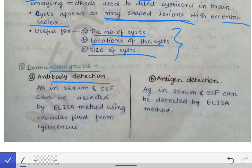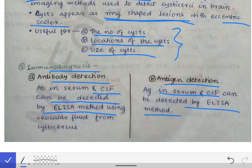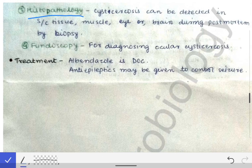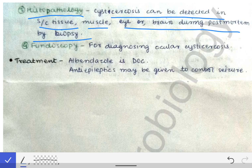Immunodiagnosis can also be performed, including antibody detection and antigen detection. Antibodies in serum and CSF can be detected by ELISA. Serum antigen of Taenia solium larva can also be detected by ELISA. Histopathology is another option but can only be performed after surgical removal of the cyst, or post-mortem by biopsy of subcutaneous tissue, muscles, eye, or brain.